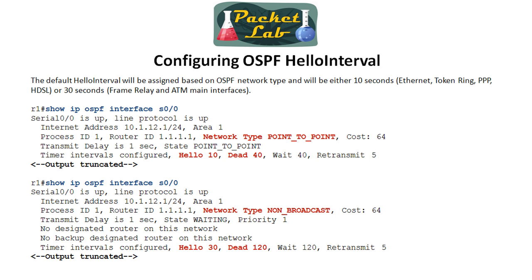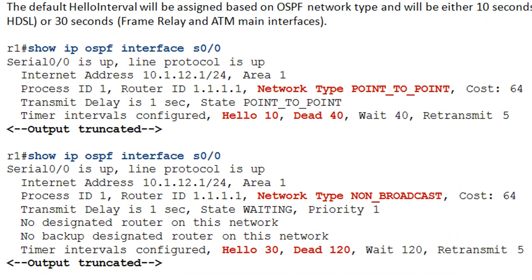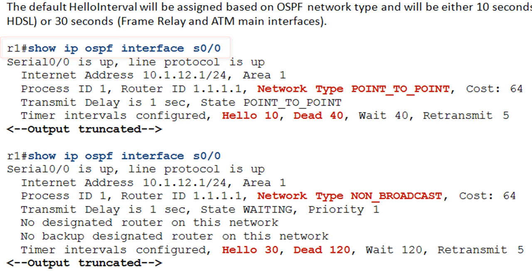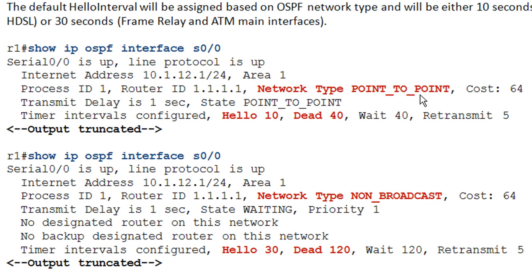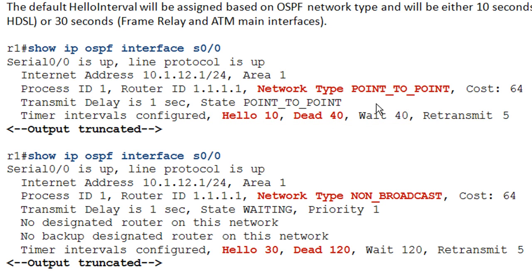Let's get into some CLI action. On R1's interface Serial 0/0, the command to view the hello interval and router dead interval is 'show ip ospf interface' followed by the interface, in this case 0/0. This gives us a lot of useful information. The network type shows as point-to-point, which has a default hello interval of 10 seconds — verified here. The dead interval is set to four times that, which is 40 seconds.